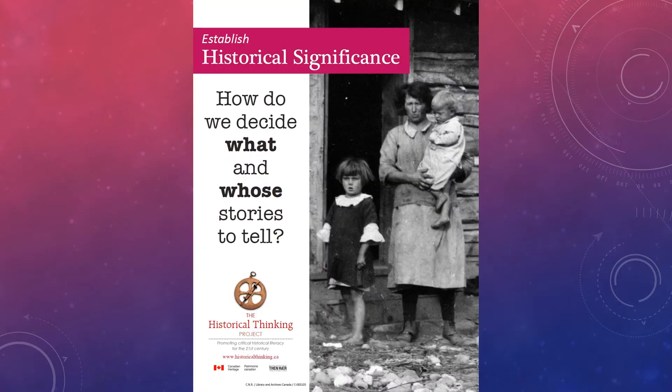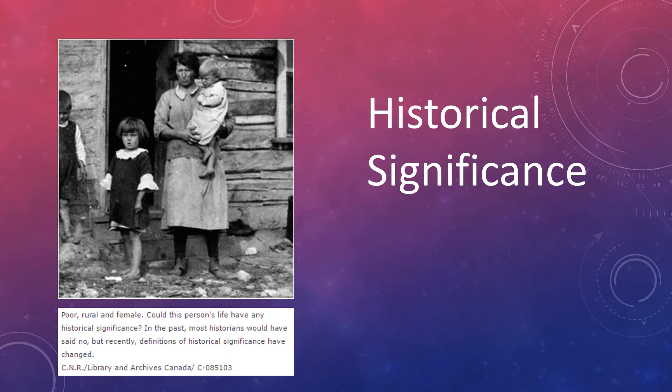The first historical thinking concept is historical significance: how do we decide what and whose stories to tell? Events that have historical significance involve great change for large numbers of people over lasting periods of time. Historical significance also involves situations that are representative or that show trends and patterns over time.